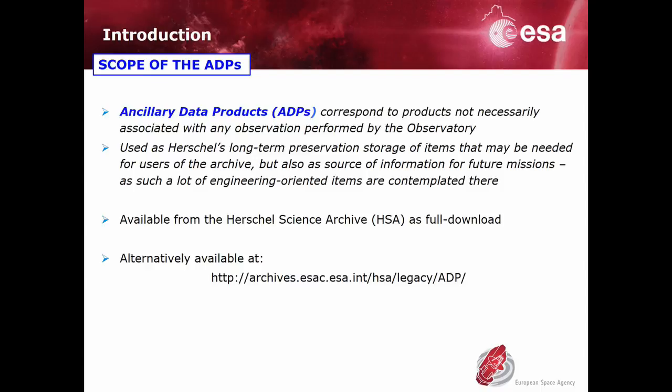Therefore, the ancillary data are basically products generated in the course of the different phases of the Herschel mission, which are not necessarily linked to a specific observation. These products are made available through the Herschel Science Archive as a full download pack or as individual products at the following link.